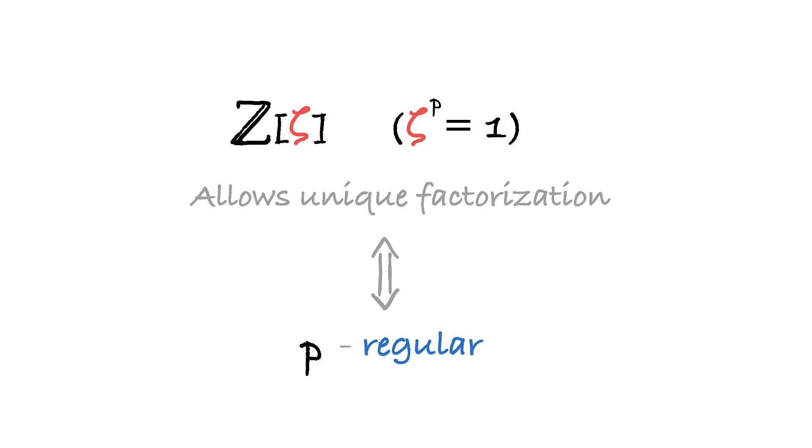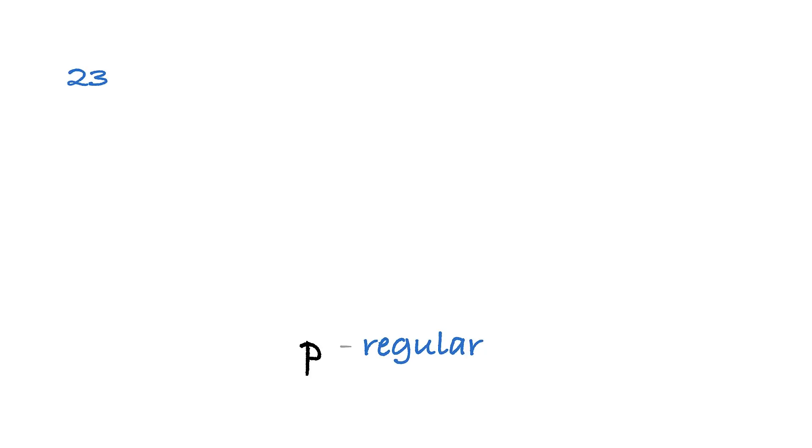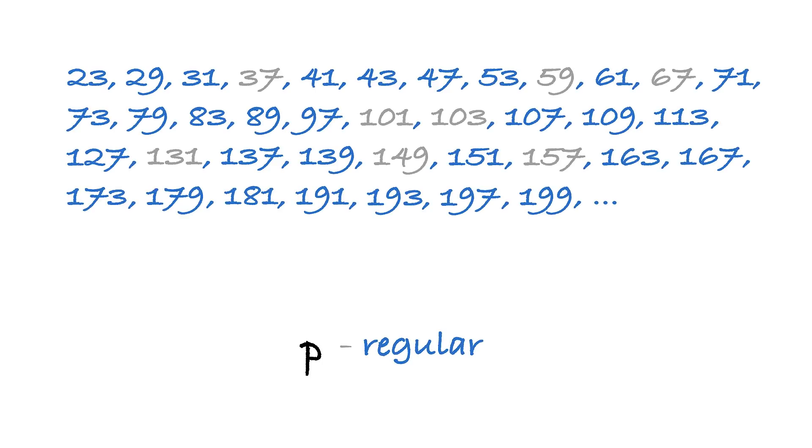Prime numbers for which the corresponding ring Z[zeta] allows for unique factorization of ideals are called regular primes. So 23 is a regular prime. In fact, the smallest irregular prime is 37, and then we're good again till the next irregular one, which is 59, and so on. There's plenty of regular primes, and that's where Fermat's Last Theorem can be proven using this method. As a matter of fact, it has been conjectured that there are infinitely many regular primes, and that regular primes constitute over 60 percent of all prime numbers, but this conjecture remains unproven to this day.